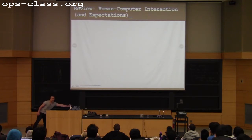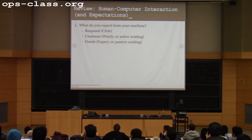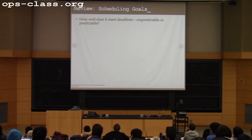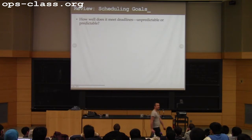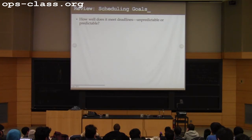We talked about what you guys expect from your computer — you expect it to respond when you do something, continue tasks at a rate sufficient to produce smooth performance, and complete background tasks after a period of time. These expectations drive our scheduling goals. When we think about schedulers, we consider how well the algorithm knows anything about deadlines, and whether it can distinguish between a thread with a deadline and one without — like the thread about to redraw the mouse pointer versus one running an index scan in the background.